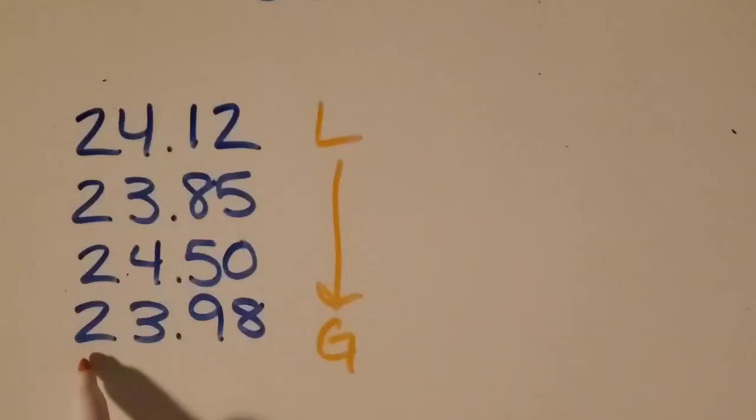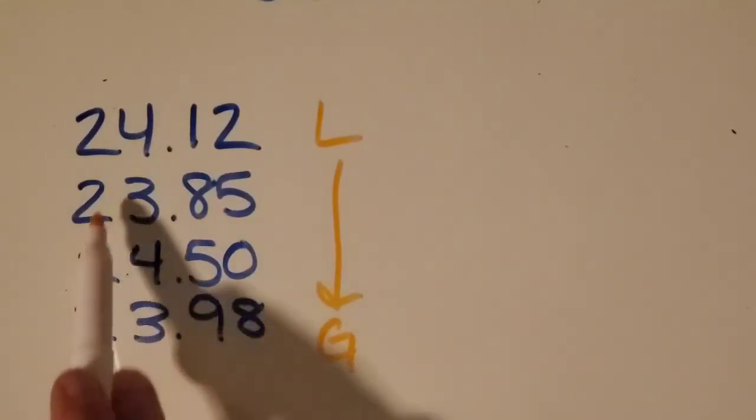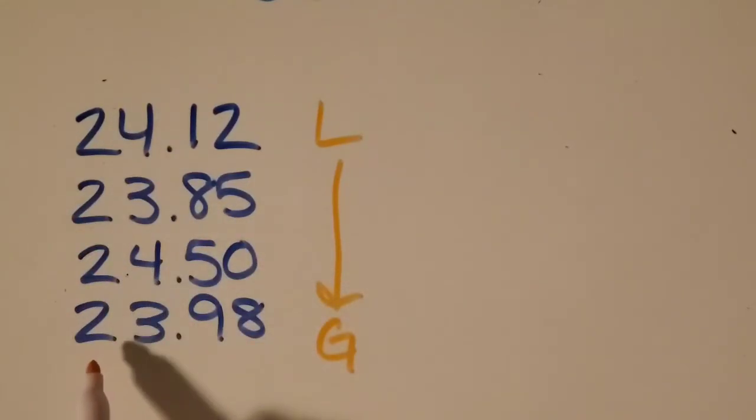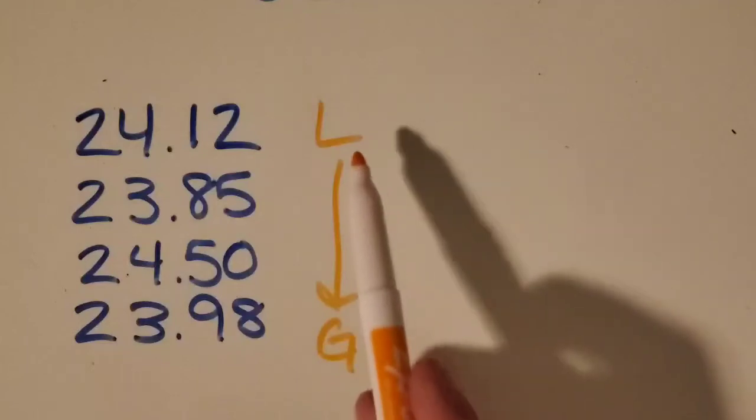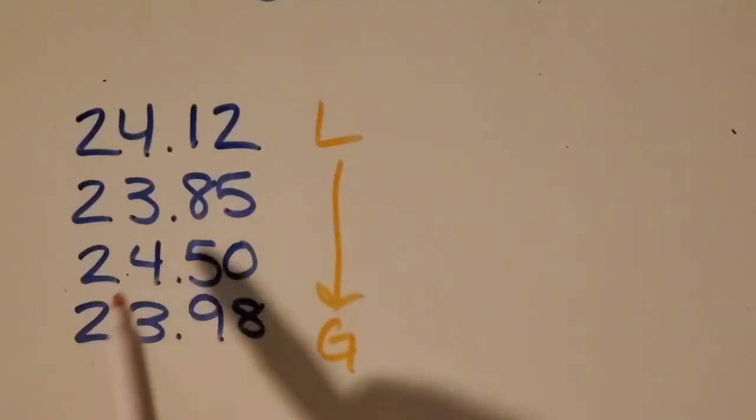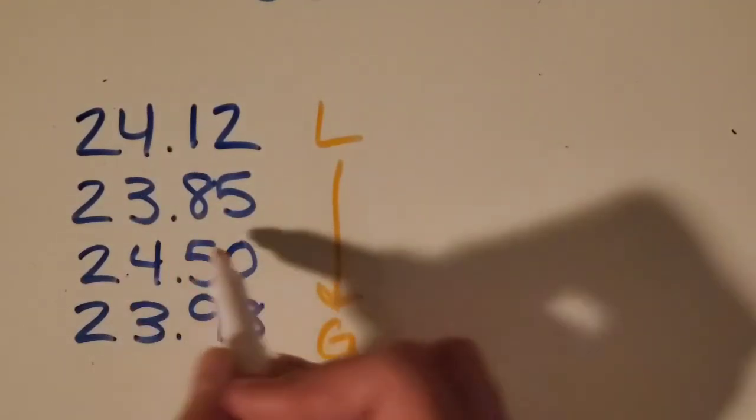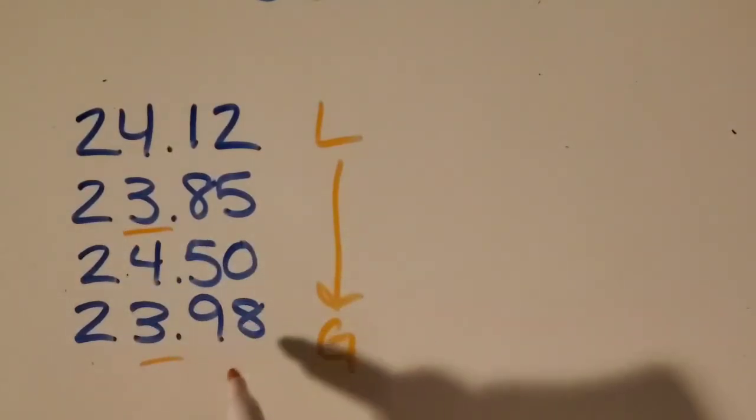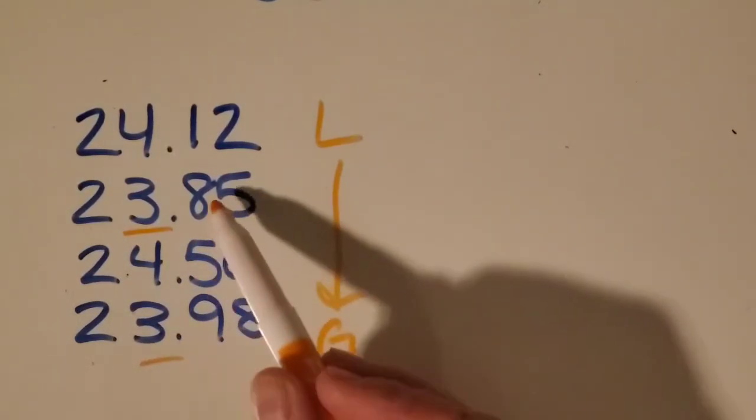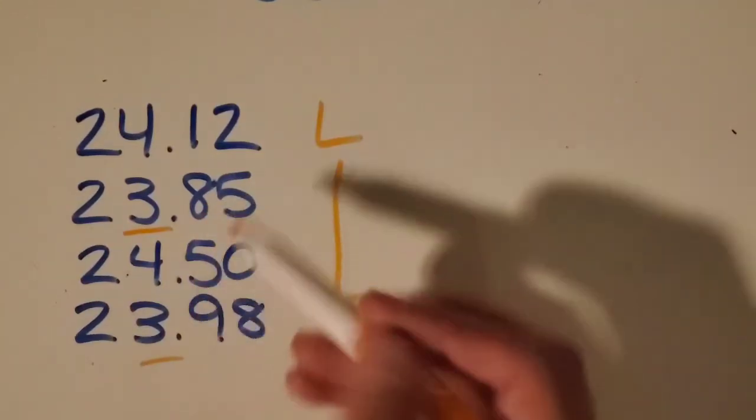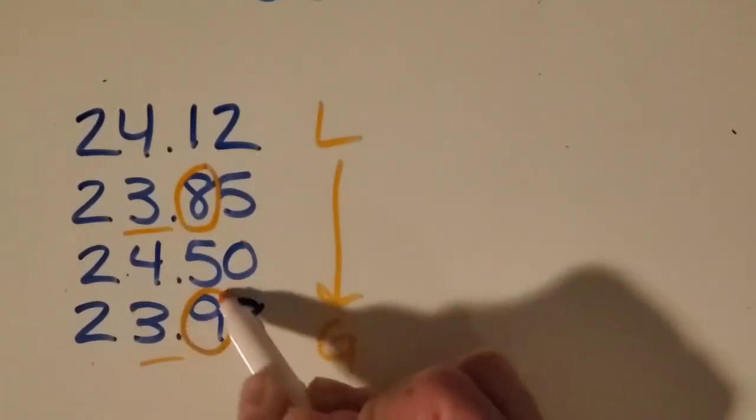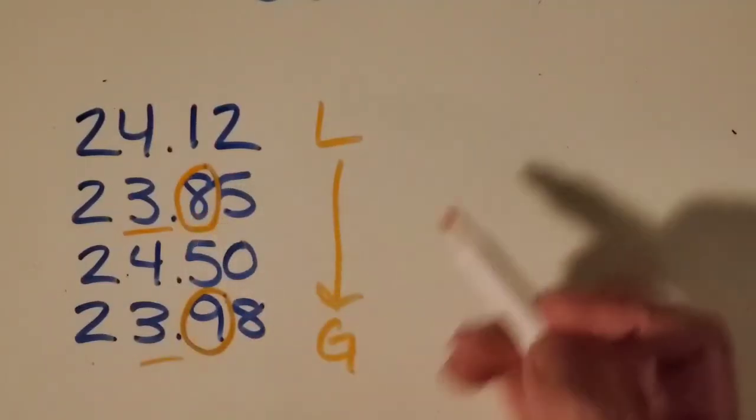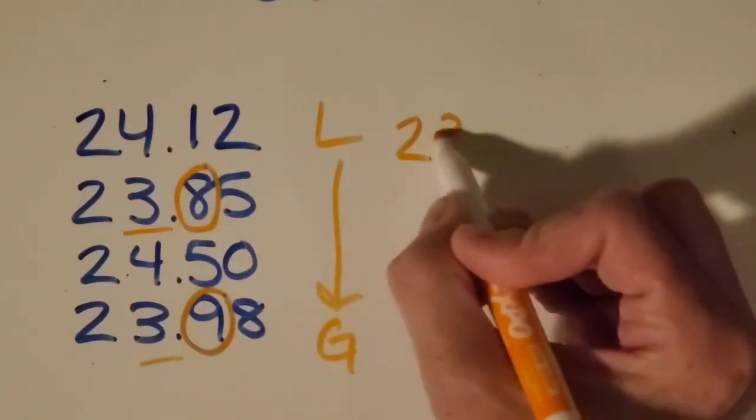So I like to start with my largest place value and just take a look. Can I compare those twos in the tens place? No, I've got to move over and look at my ones place then. My smaller ones place, since I'm trying to find the least number, my smallest one is three and three. So then I'm going to keep moving over and compare those two. So now in the tenth place, I've got an eight and a nine. And we know that that eight is the least, so I'm going to put that right here.